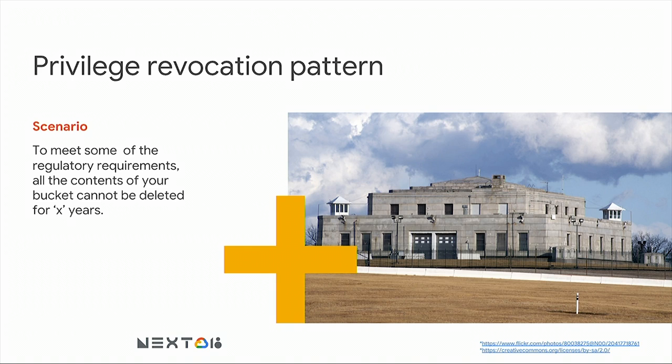The last pattern is the privilege revocation pattern — about how to effectively *not* delete data. For financial industry regulations, you may be required to keep data for a specified number of years. In those cases, you can revoke deletion access so that no one in your organization can delete the data. Google Cloud will keep it for the number of years you specify, then restore access so you can delete it. That image is Fort Knox, where gold is stored — not a jail.